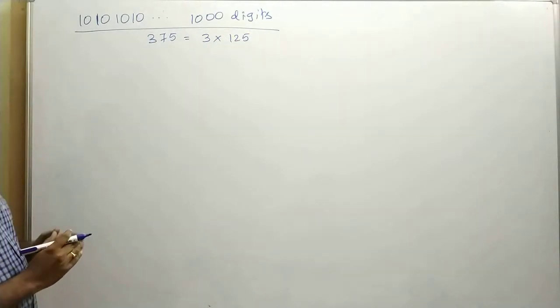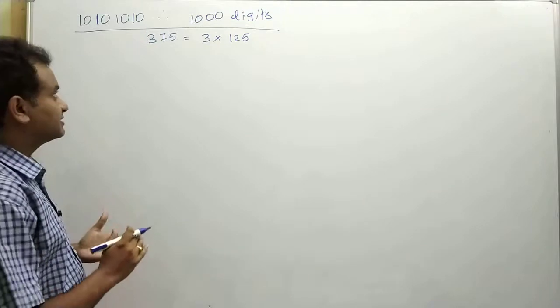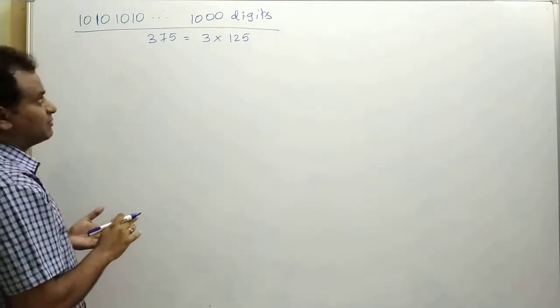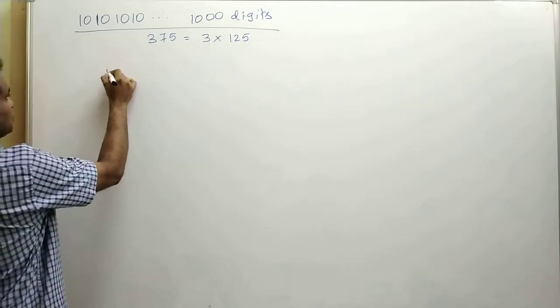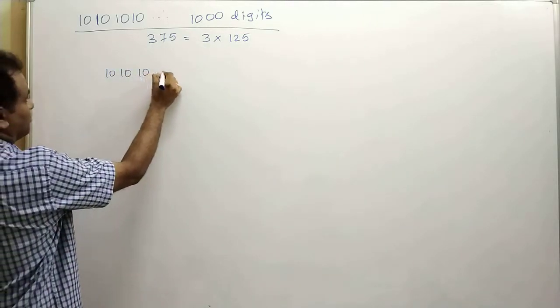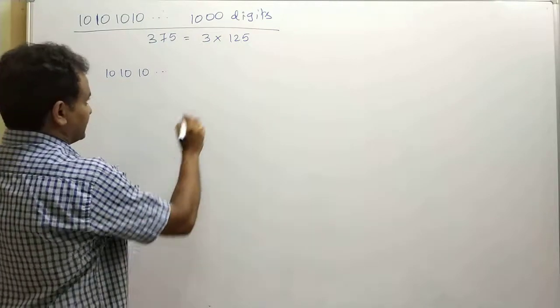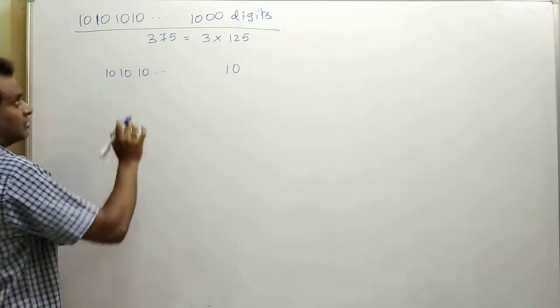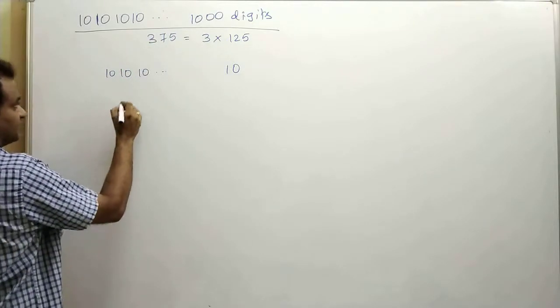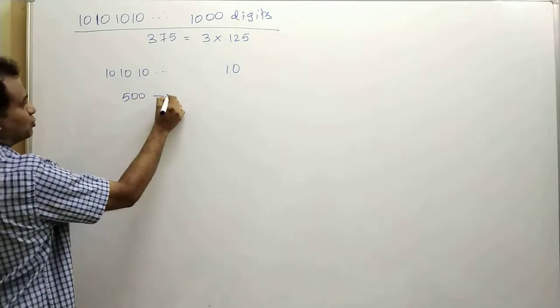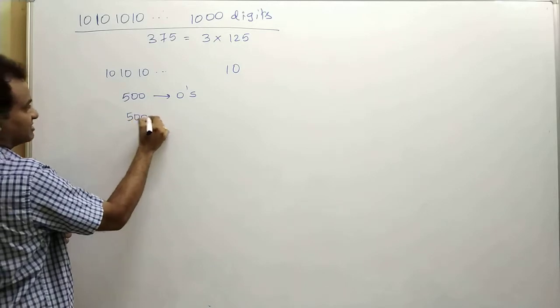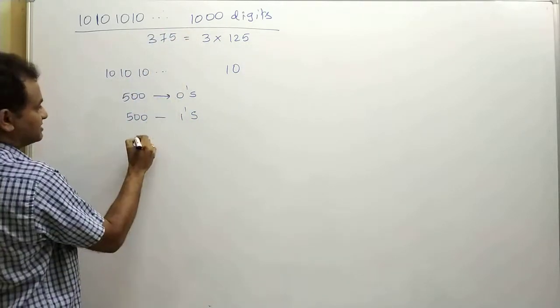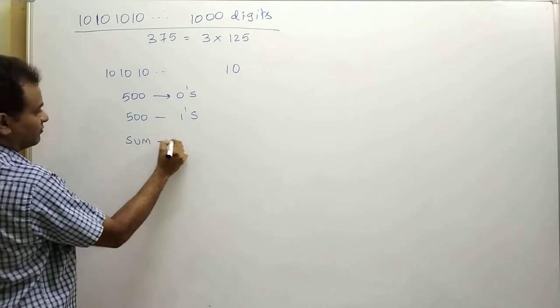We know that the divisibility rule for 3 is sum of all the digits must be divisible by 3. So first let us find out the sum of all the digits. So 101010 till 1000 digits means the last few terms will be 10.